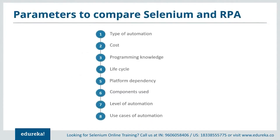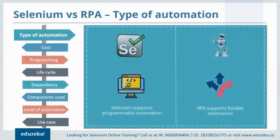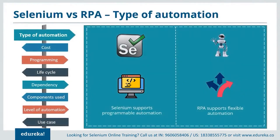Now let's look at the parameters that will be taken into consideration for comparing the two automation giants. We will compare them based on the type of automation, the cost of these tools, the programming knowledge required, their lifecycle, platform dependency, the components used, the level of automation, and the use case. Starting with the type of automation: Selenium supports programmable automation, whereas RPA supports flexible automation. Programmable automation can change the sequence of any operation based on user requirements, whereas flexible automation is a hybrid of fixed and programmable automation.